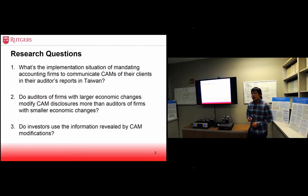I set three research questions. First, what's the implementation situation of mandating accounting firms to communicate CAMs of their clients in their auditor's reports in Taiwan? Second, do auditors of firms with larger economic changes modify CAM disclosures more than auditors of firms with smaller economic changes? Third, do investors use the information revealed by CAM modifications?